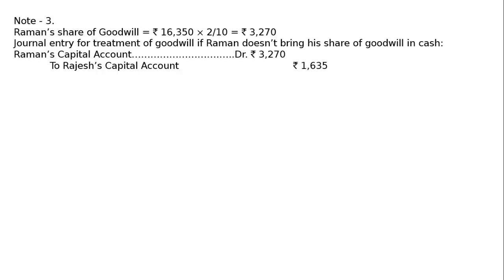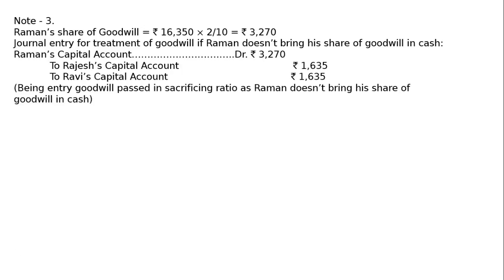To Rajesh's Capital Account Rs. 1,635, and to Ravi's Capital Account Rs. 1,635. The old ratio is 3 to 2 and the new ratio is 5 to 3 to 2, but since the sacrificing ratio has been calculated as 1 to 1, this goodwill entry is passed in the sacrificing ratio. Being entry for goodwill passed in sacrificing ratio as Raman does not bring his share of goodwill in cash.